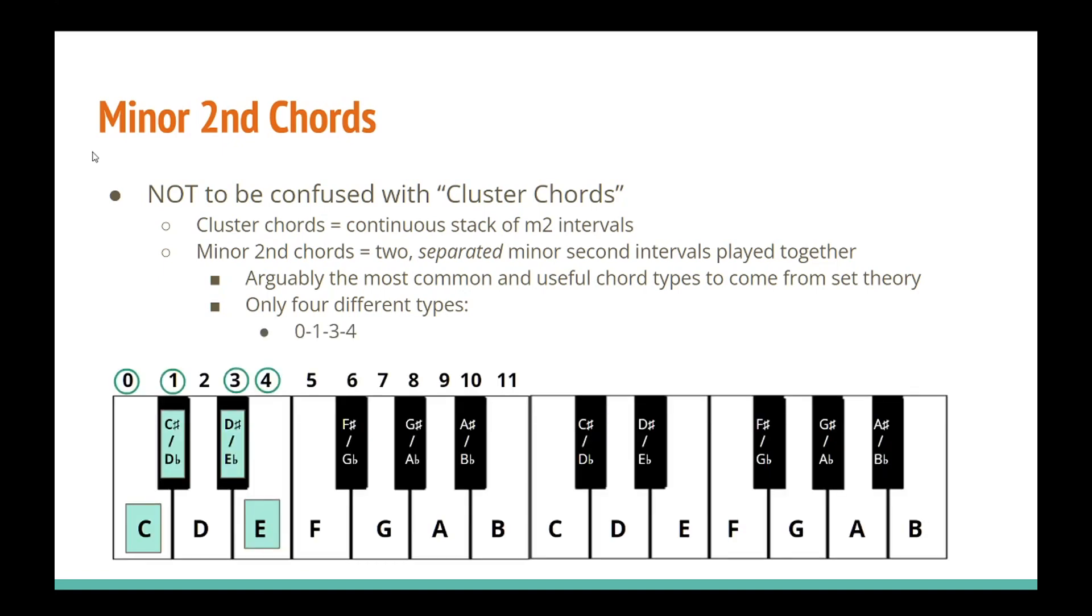Since set theory insists on naming chords based off their most condensed and closed voicings, there are really only four types of minor second chords that you can use before they start repeating. There's the 0-1-3-4 chord, which consists of two minor second intervals separated by a half step. The 0-1-4-5 chord, which consists of two minor second intervals separated by a whole step. The 0-1-5-6 chord, which consists of two minor second intervals separated by a whole step and a half step.